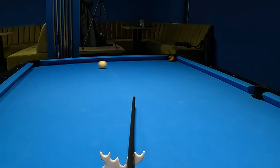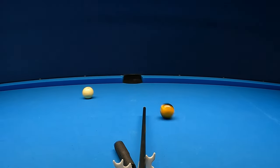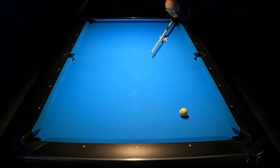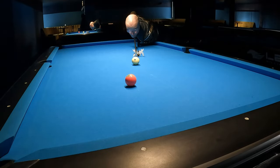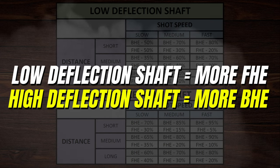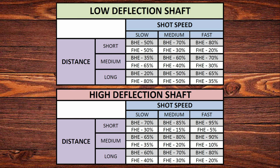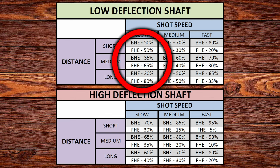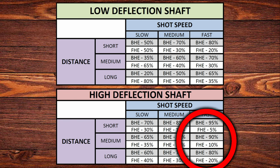Aiming using back-hand English and front-hand English in pool is really difficult and requires a lot of practice. Looking at the comparison schedules, the biggest difference is between shaft types: with a low deflection shaft you can apply more front-hand English than with a high deflection shaft. The biggest difference is visible on long distance, slow speed shots — when using a low deflection shaft at low speed, the BHE value is never higher than the FHE value. If playing a long distance shot with a high deflection shaft, be careful with front-hand English because too high a value can dramatically change the cueball's path.